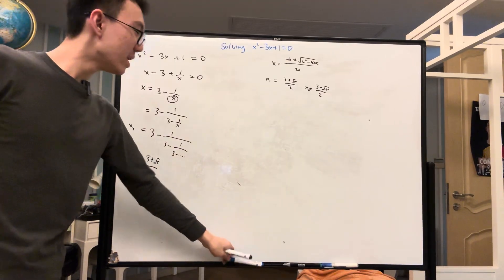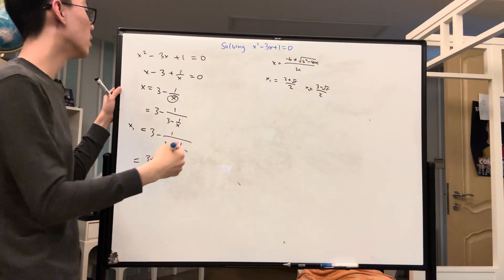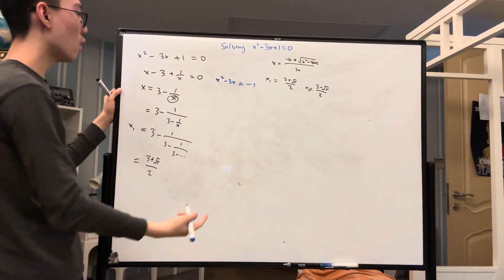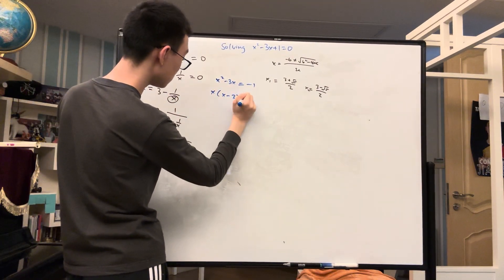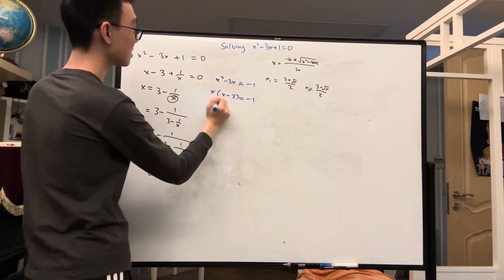Well, what we essentially did here, if we were to understand it in a different way, was we did this. We moved the negative, we moved the 1 over, we factored this part, and then we moved the x over.